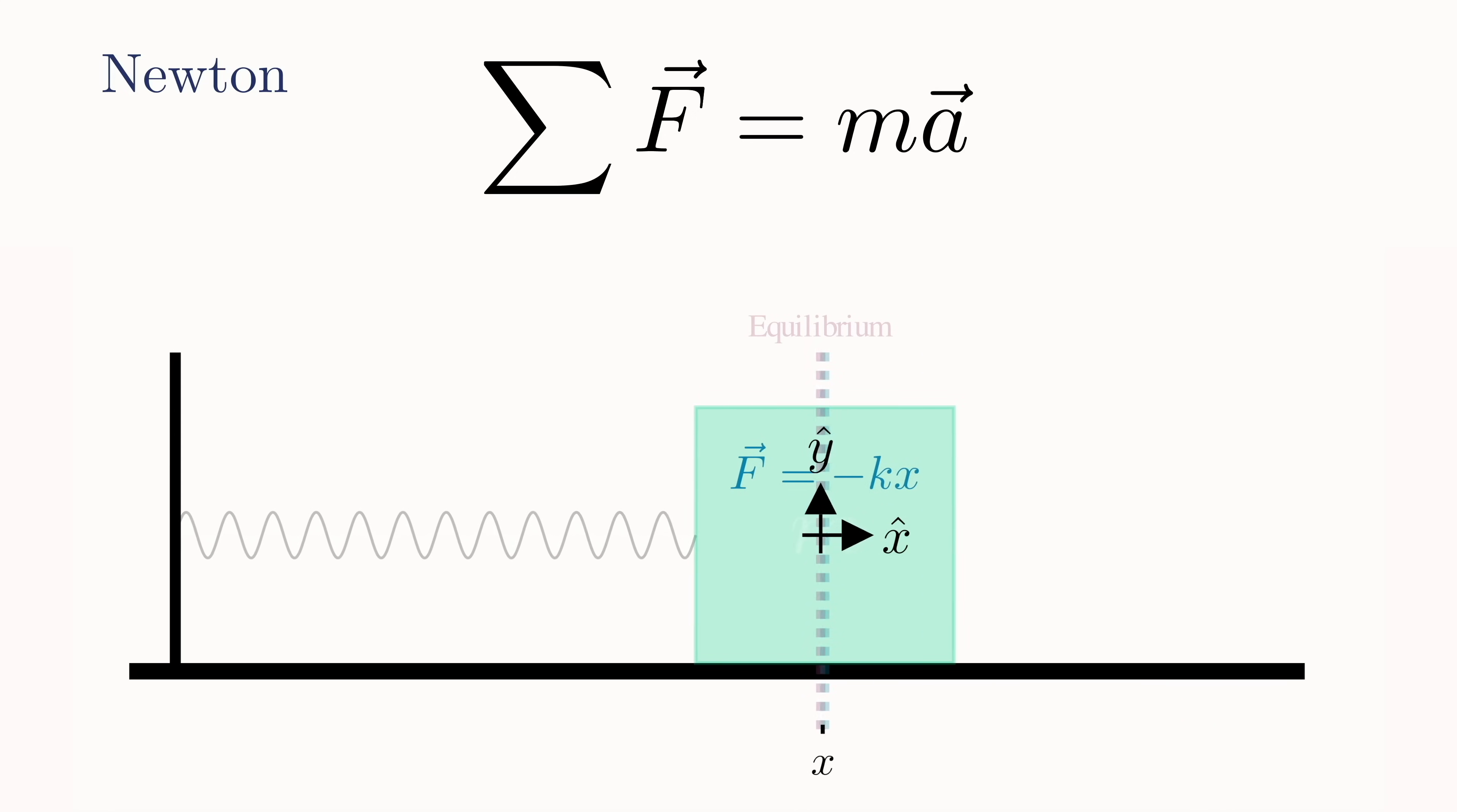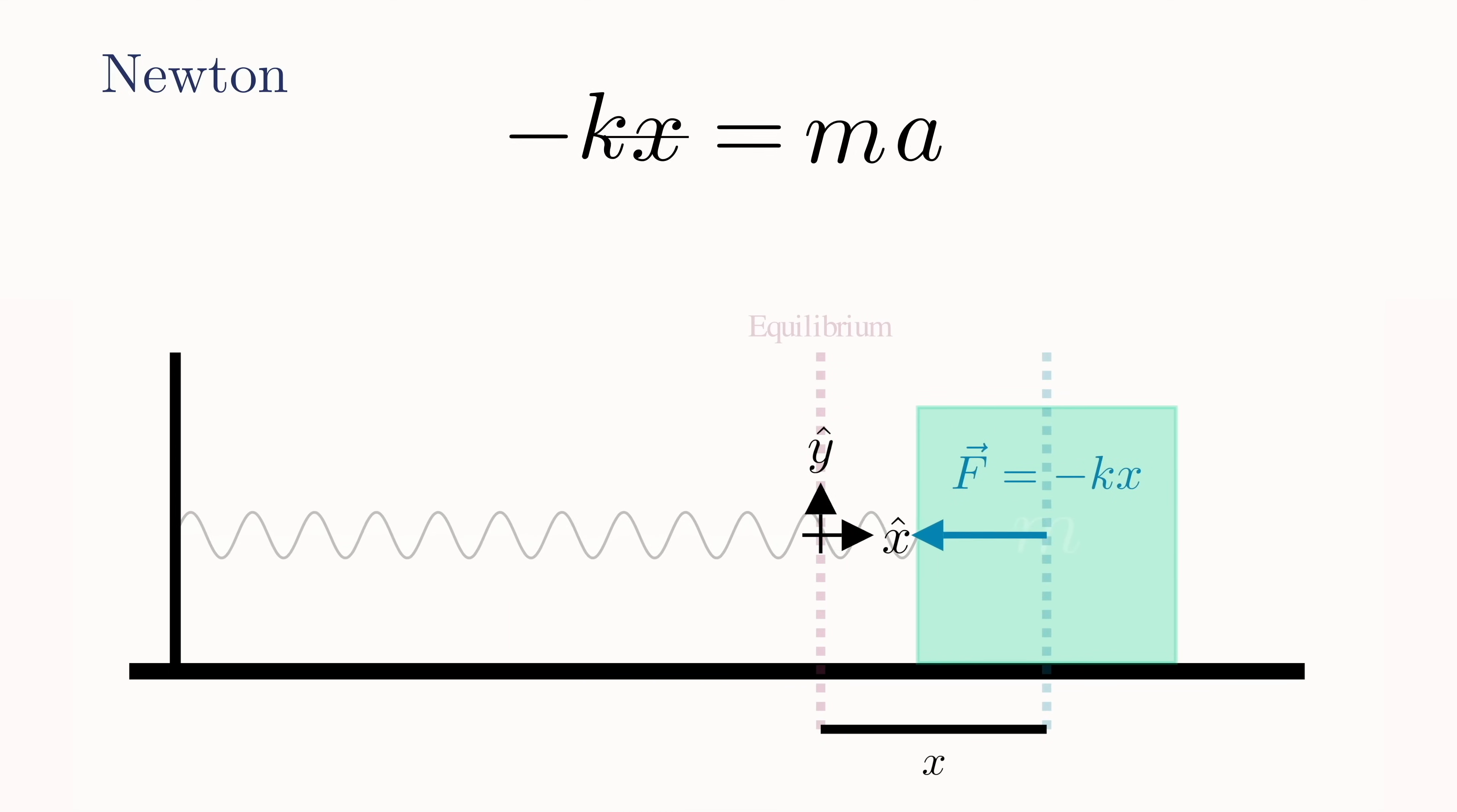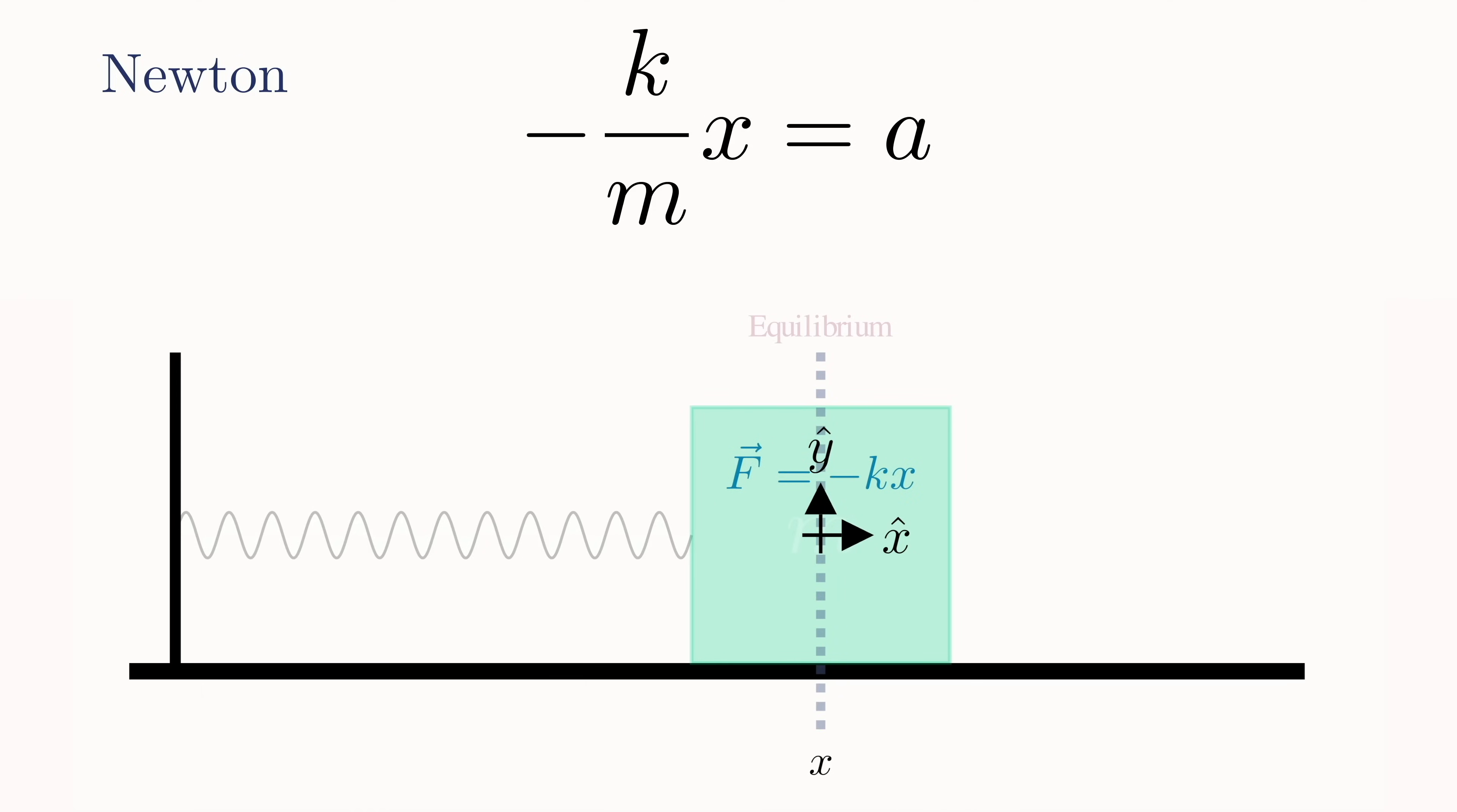This will be the only net force acting on the mass. So we can substitute negative kx in for the force in f equals ma. Now the force, and consequently the acceleration, will only be in the x-direction. So we can just get rid of these arrows to keep things a bit cleaner. And after some slight rearranging, we have an equation for the acceleration of the mass.